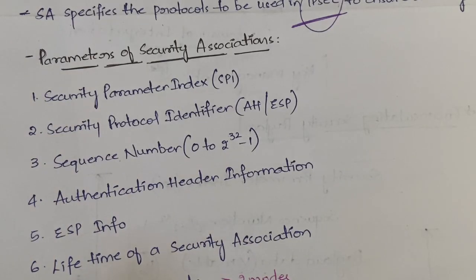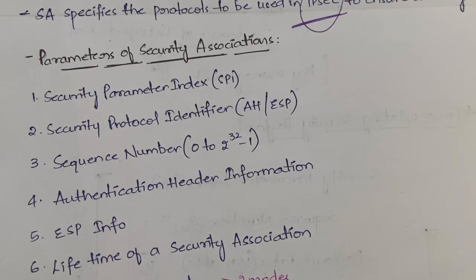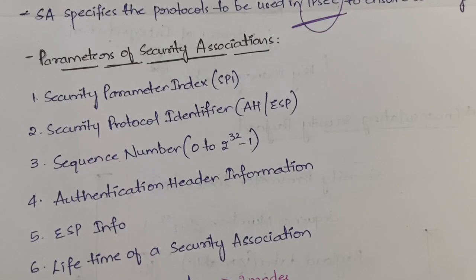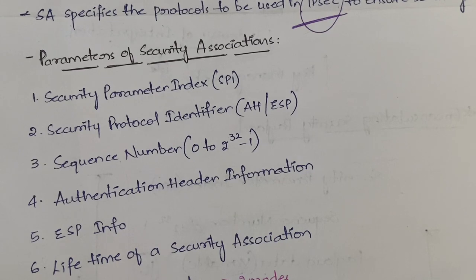The SPI is used to identify a particular security association of a packet. For a particular packet, which security association it is associated with — through which algorithm or through which protocol — all those details will be there. In order to identify that, we have a Security Parameter Index for each packet.